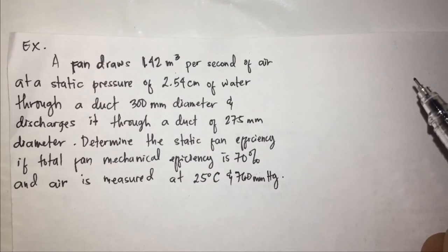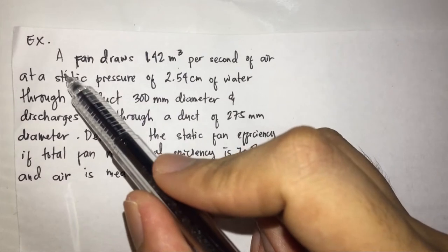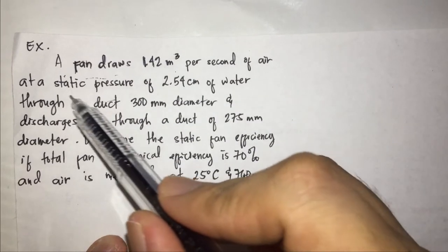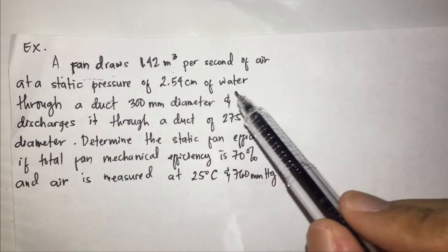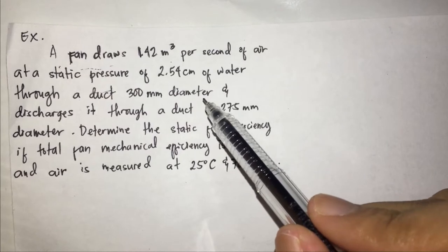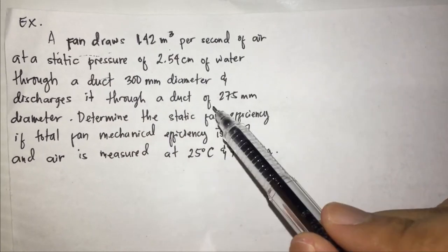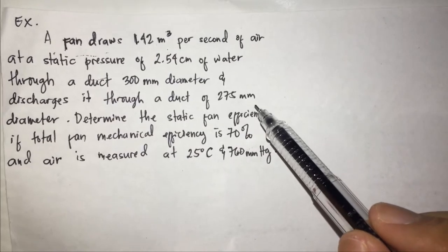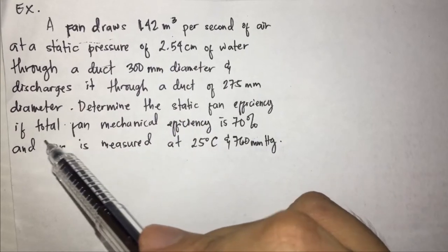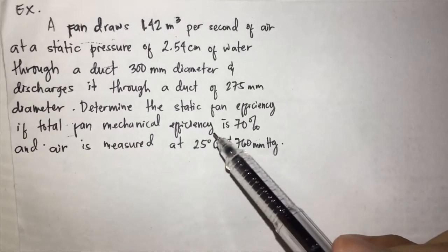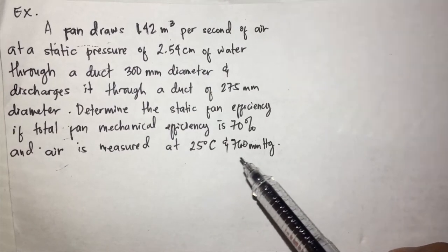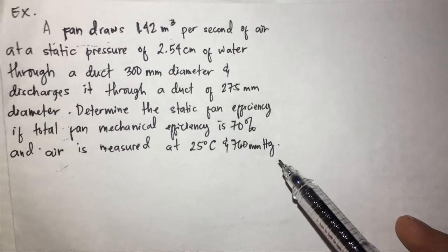Example of a fan problem. A fan draws 1.42 cubic meters per second of air at a static pressure of 2.54 cm of water, through a duct 300 mm diameter and discharges it through a duct of 275 mm diameter. Determine the static fan efficiency if total fan mechanical efficiency is 70% and air is measured at 25 degrees Celsius and 760 mmHg.